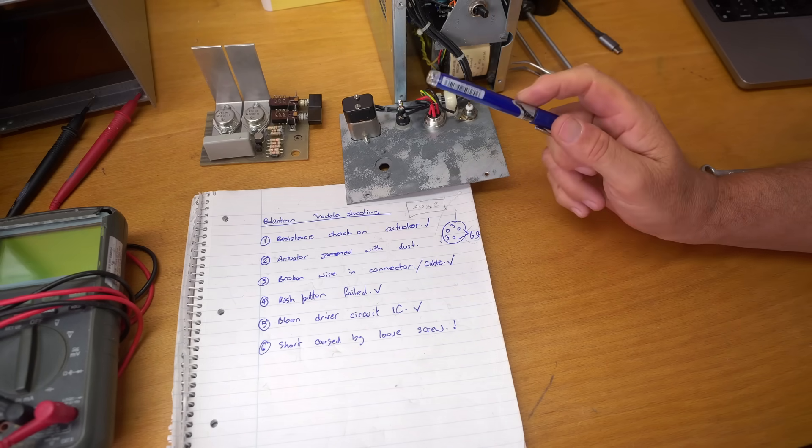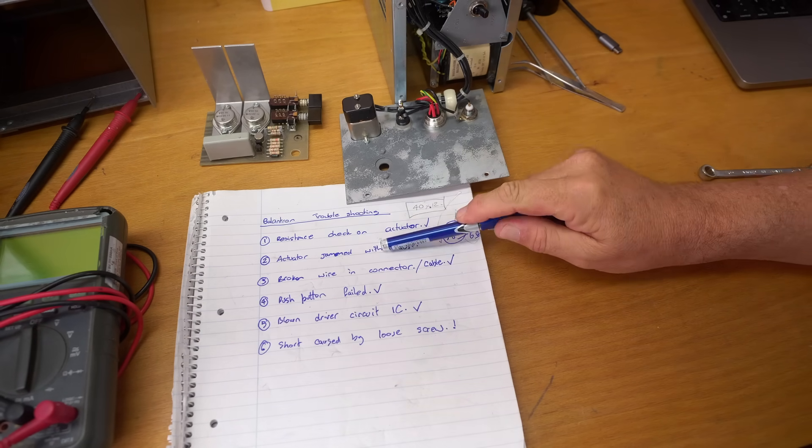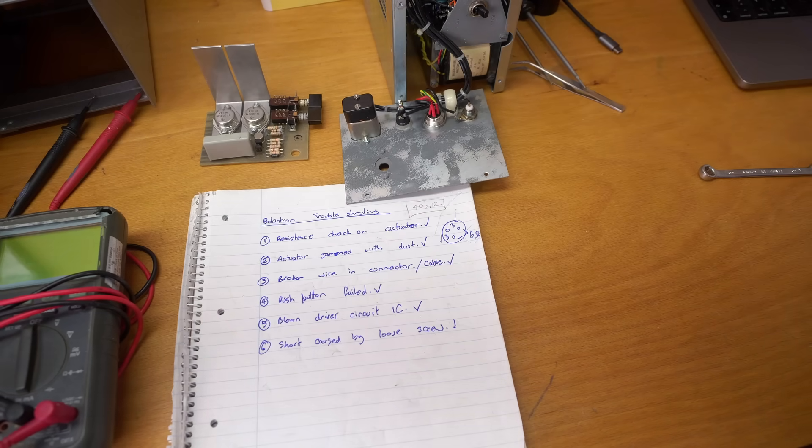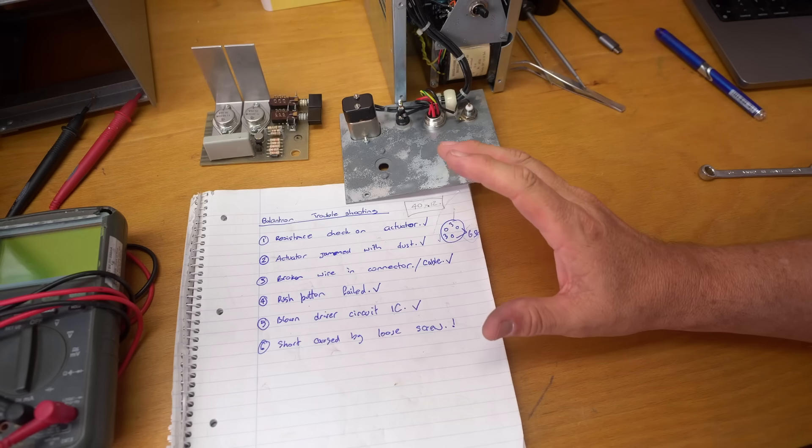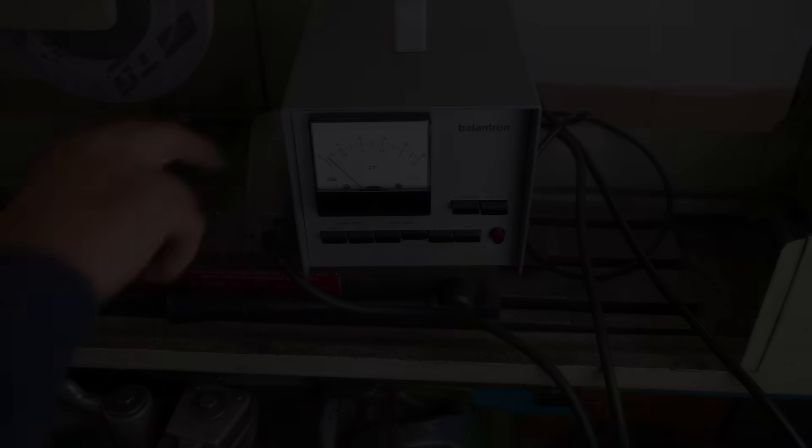Seeing as systematic troubleshooting would require me to change one thing, test it, change another thing, test it and I've done that really well because I've done six things. I think it's probably now time to put it all back together, test it and see if it's magically fixed. Let's try that again.